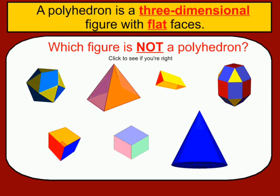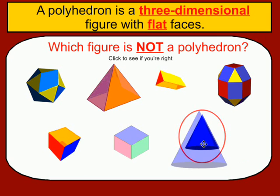One of these shapes is not a polyhedron. Which one is not comprised of all flat faces? Well, if you chose the cone, you are correct. That is not a polyhedron.